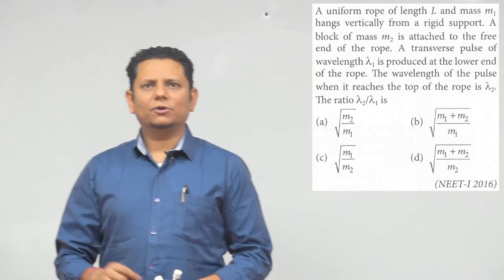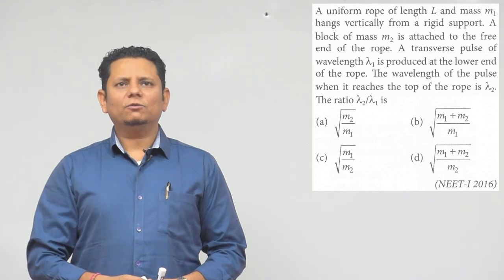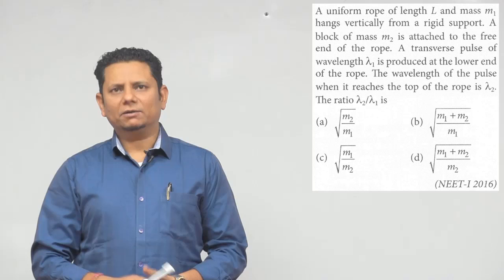Next question. The question says a uniform rope of length L and mass M1 hangs vertically from a rigid support. A block of mass M2 is attached to the free end of the rope.